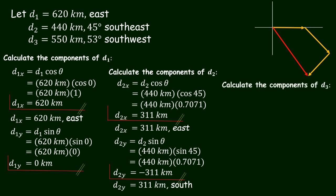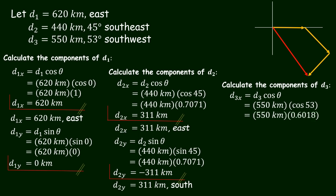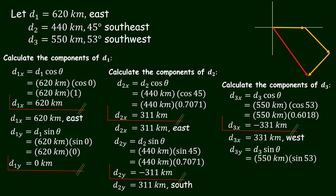Next, we calculate the components of D sub 3. The equation is D sub 3x equals D sub 3 cosine theta. By substitution, we have 550 kilometers times cosine 53. Cosine 53 is equal to 0.6018, giving D sub 3x equals negative 331 kilometers. We put a negative sign because D sub 3 points in the western direction. For D sub 3y, the equation is D sub 3y equals D sub 3 sine theta. By substitution, we have 550 kilometers times sine 53. Sine 53 is equal to 0.7986, giving a result of negative 439 kilometers. We put a negative sign because D sub 3 along y is pointing in the southern direction.